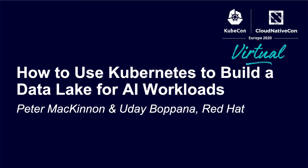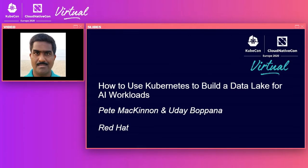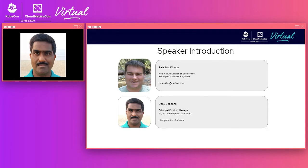Hello everyone. Welcome to the session about using Kubernetes to build a data lake for AI and machine learning workloads, and also how we used it for the entire AI and ML infrastructure stack. I am Uday Bopana, a principal product manager at Red Hat, responsible for AI, machine learning, and big data in the storage business unit. With me is Peter McHannon, and he works in the Red Hat AI center of excellence as a principal software engineer working on AI and machine learning technologies. We have collaborated on this project for close to a couple of years.